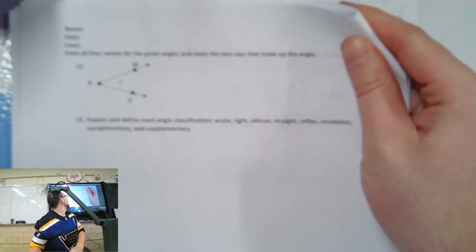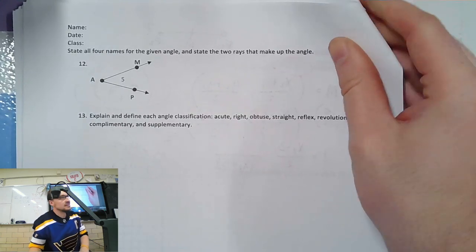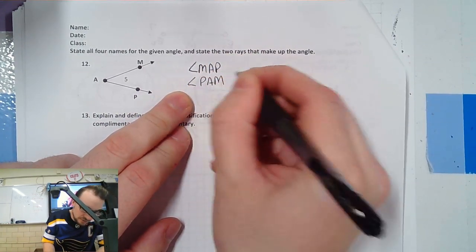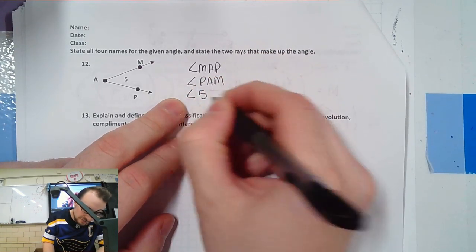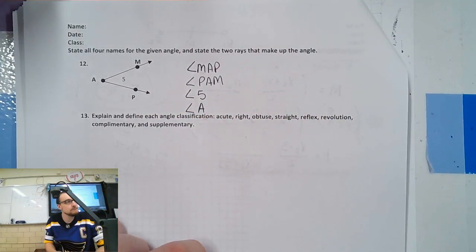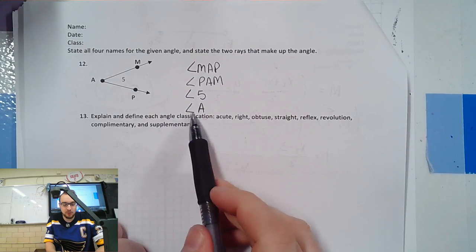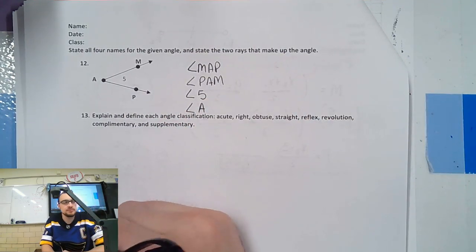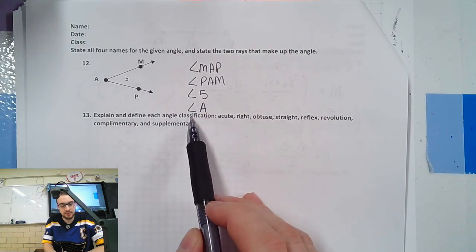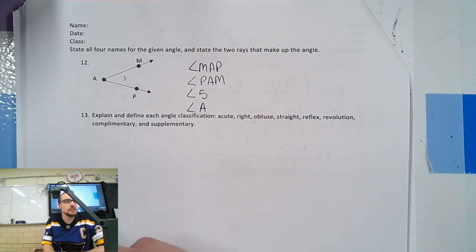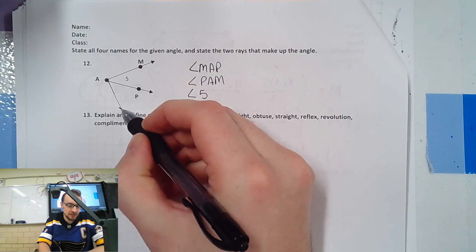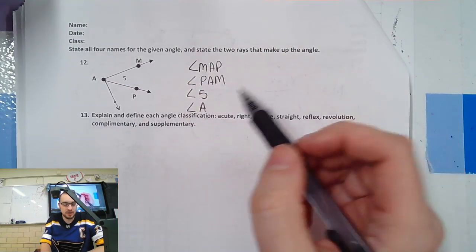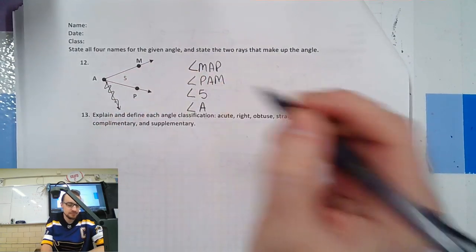Next: name the angle. You can call it angle MAP, angle PAM, angle five, or angle A. Angle A is the least specific — if I drew another ray from the same vertex, it's ambiguous which angle you mean. It's better to use all three letters or a number.